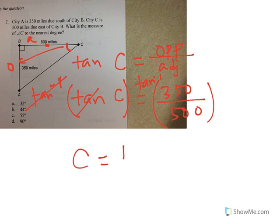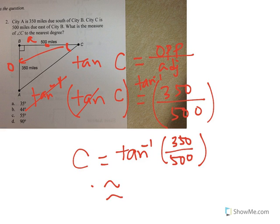And we have angle C is equal to the tangent inverse of 350 over 500. If you evaluate that using the calculator, you will have C is approximately 35 degrees. And so it looks like answer choice A is the correct answer.